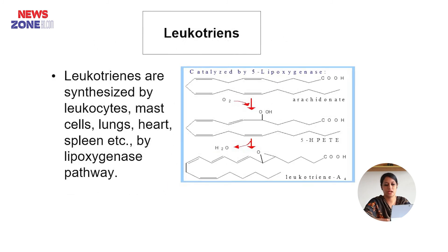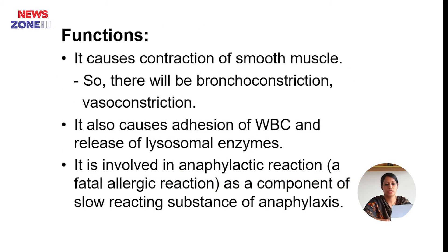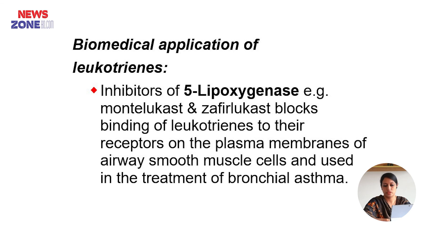Leukotrienes are synthesized by leukocytes, mast cells, lung, heart, spleen, etc., via the lipoxygenase pathway. Their functions include contraction of smooth muscle, resulting in bronchoconstriction and vasoconstriction. They also cause adhesion of white blood cells and release of lysosomal enzymes. They are involved in anaphylactic reactions as a component of slow-reacting substance of anaphylaxis. Biomedical application: inhibitors of 5-lipoxygenase — such as montelukast, which binds leukotrienes to their receptors on the plasma membrane of airway smooth muscle cells — are used for treatment of bronchial asthma.